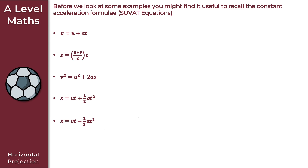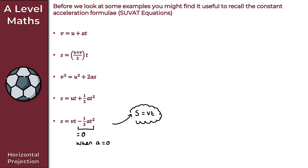As noted previously, s = vt applies when a = 0, because the ½at² term becomes zero when a equals zero. We will use this result extensively throughout this chapter. Make a note of these five SUVAT equations if you don't already have them to hand. That covers our quick introduction to horizontal projection — now we'll look at two examples.